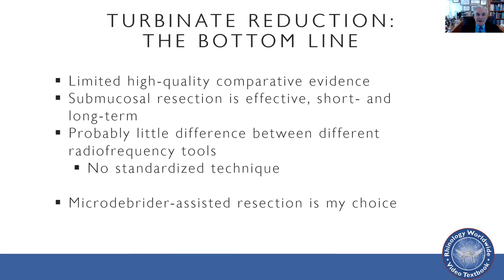The bottom line is there's very limited high-quality comparative evidence. Submucosal resection is effective both short- and long-term. Submucosal reduction with radiofrequency or some other device is also effective. There's probably not much difference between different radiofrequency tools — they're all doing very similar things at different temperatures or with different delivery devices. There's also no standardized technique. My personal choice is microdebrider-assisted resection. I can't claim this based on a preponderance of strong evidence, but it makes clinical sense, and the limited evidence out there indicates this procedure is perhaps effective for longer than some reduction techniques. I make a small stab incision and make several passes with a 2.9 mm microdebrider blade, trying to remove enough tissue to make the turbinate visibly shrink at the time of the procedure.